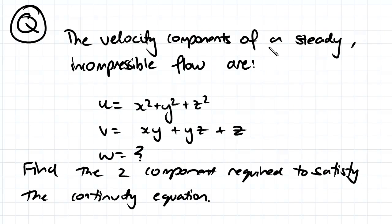The velocity components of a steady incompressible flow are u = x² + y² + z² and v = xy + yz + z. We don't know the component w; we need to find the z component required to satisfy the continuity equation.